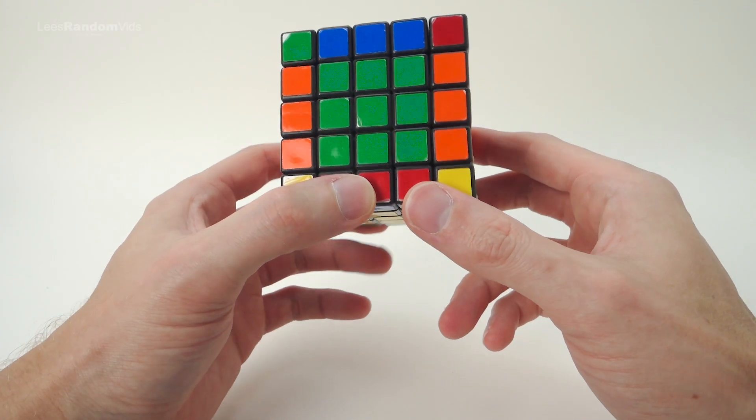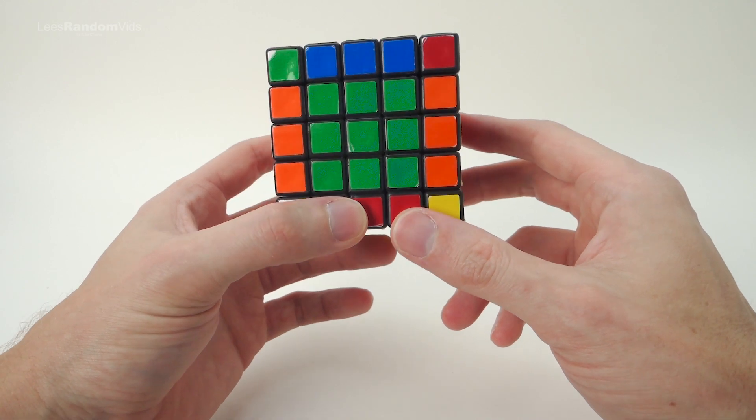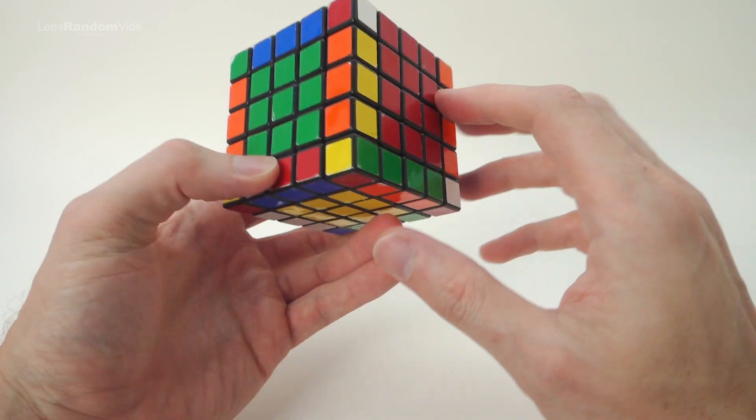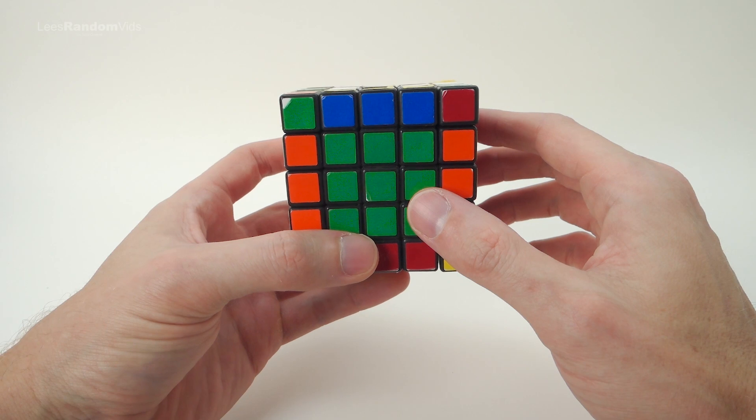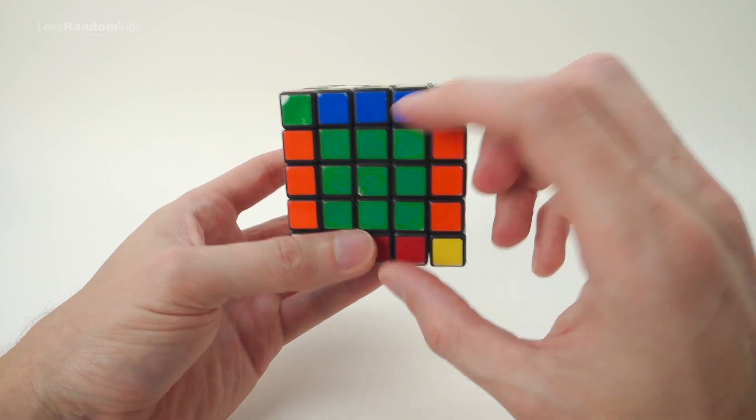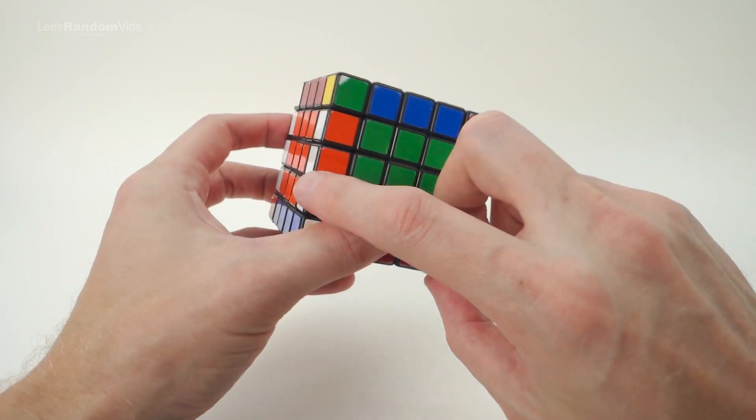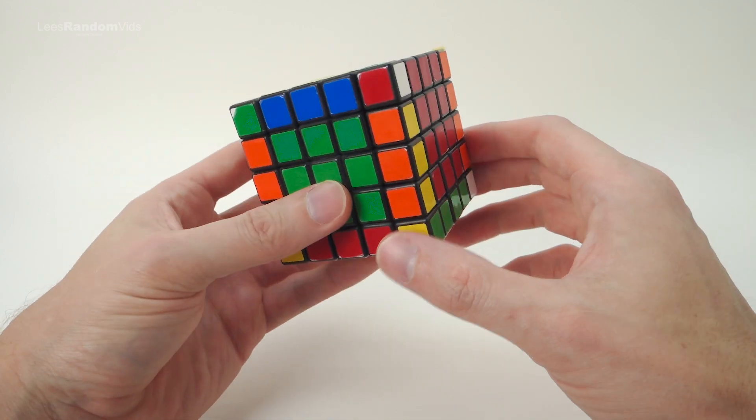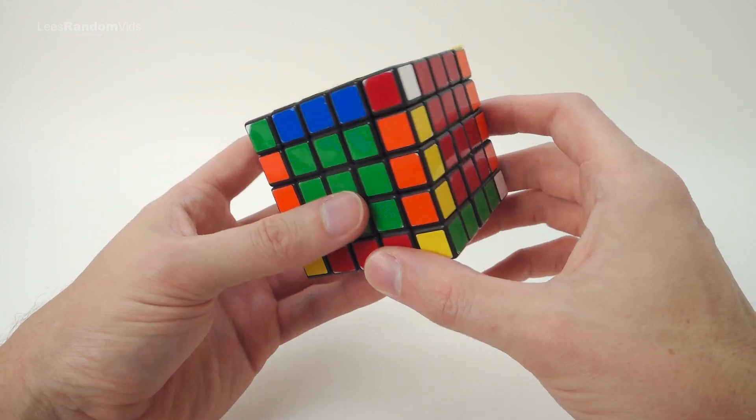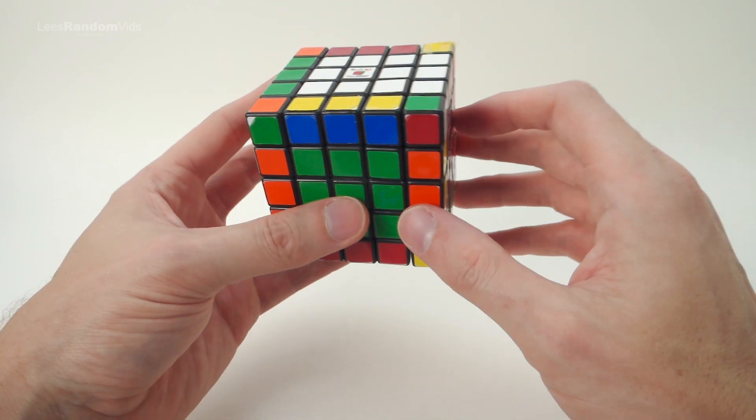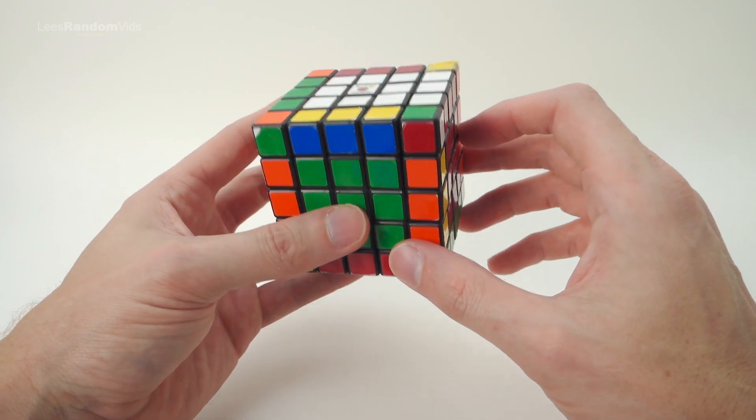Now we have the Rubik's Cube in this position. We basically just have a scrambled 3x3. And you just complete this Rubik's Cube exactly the same you would a 3x3. And you'll be pleased to know from now on when you've got every edge completed, there are no other parity errors that you can run into. This is now exactly the same as a 3x3. And you complete it as a 3x3.